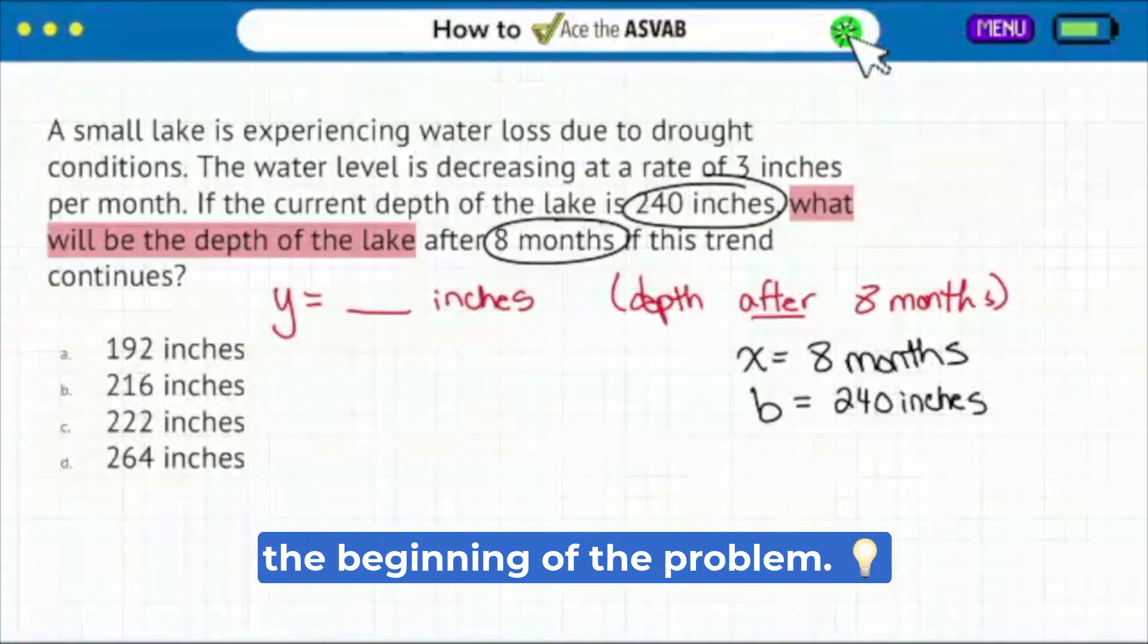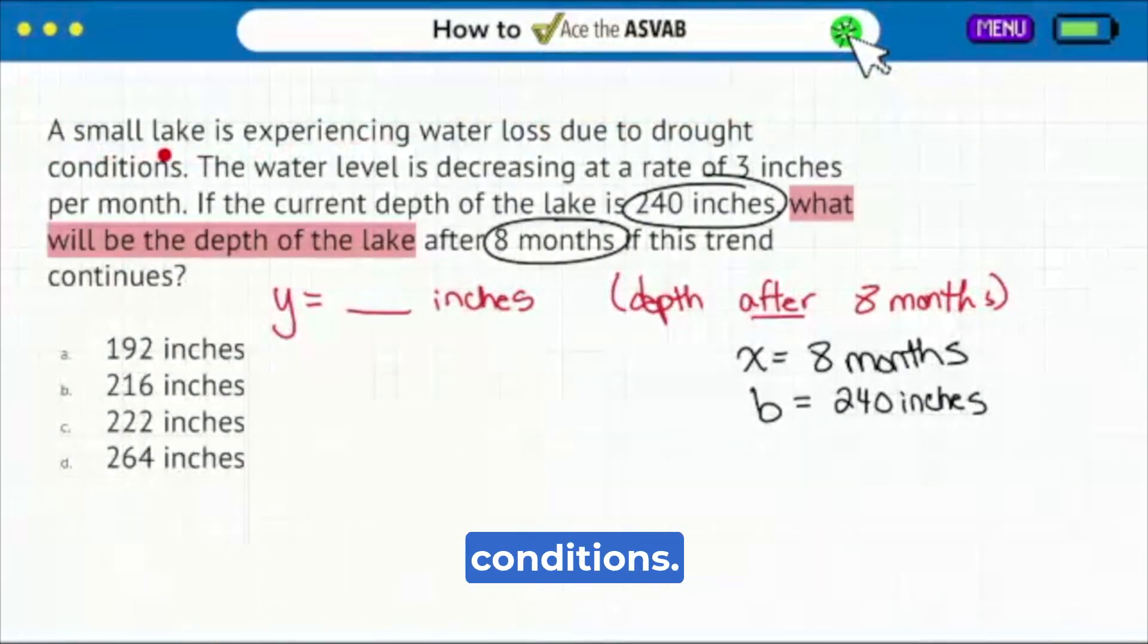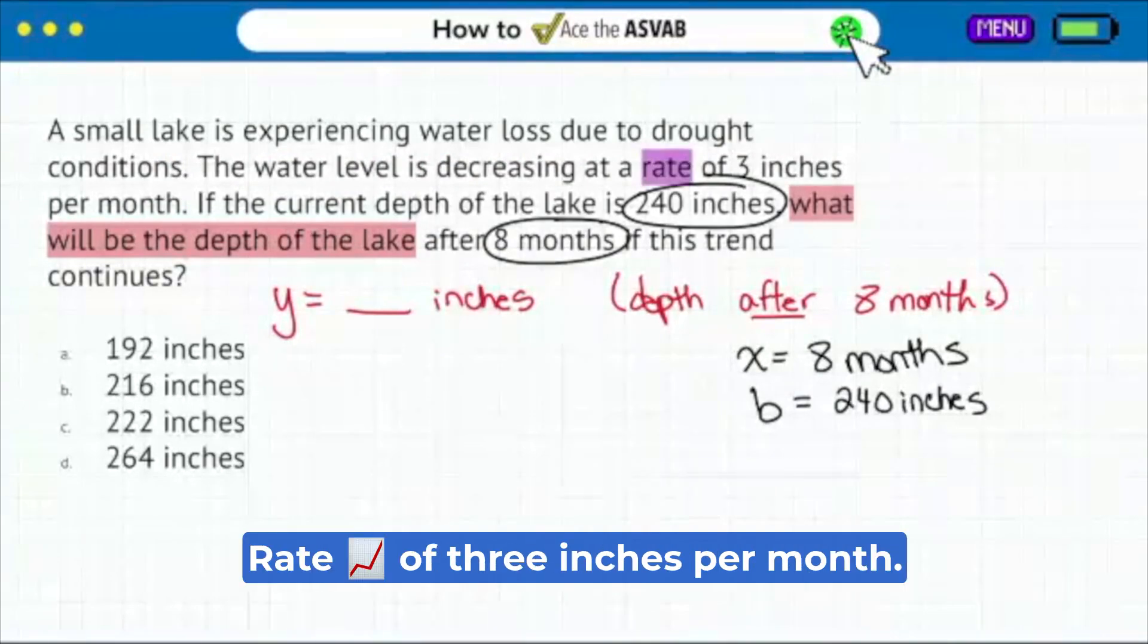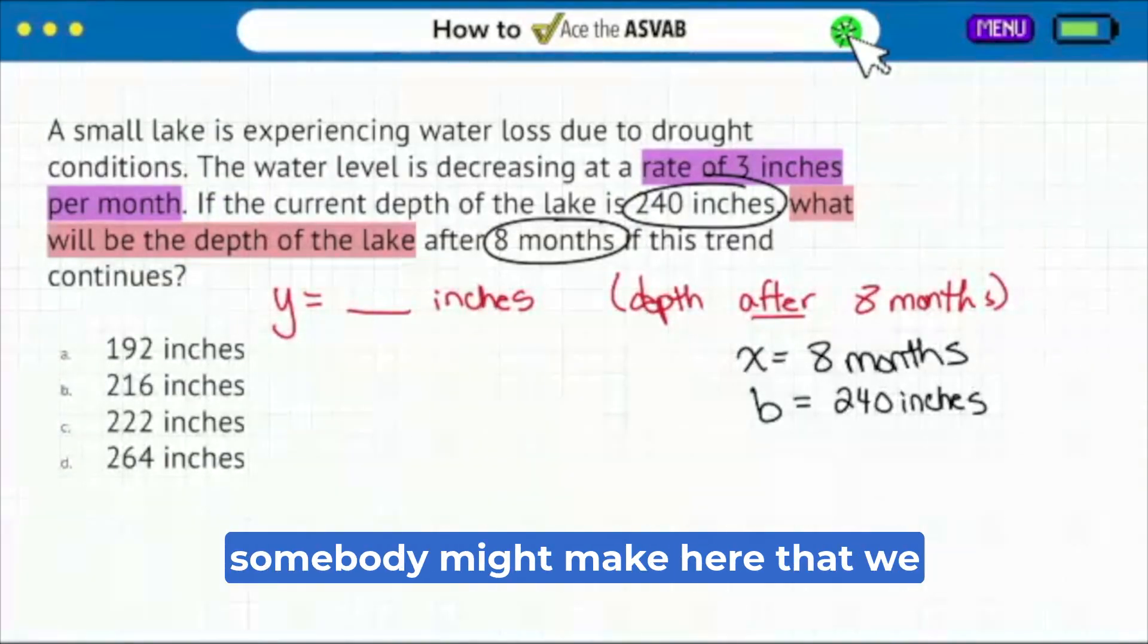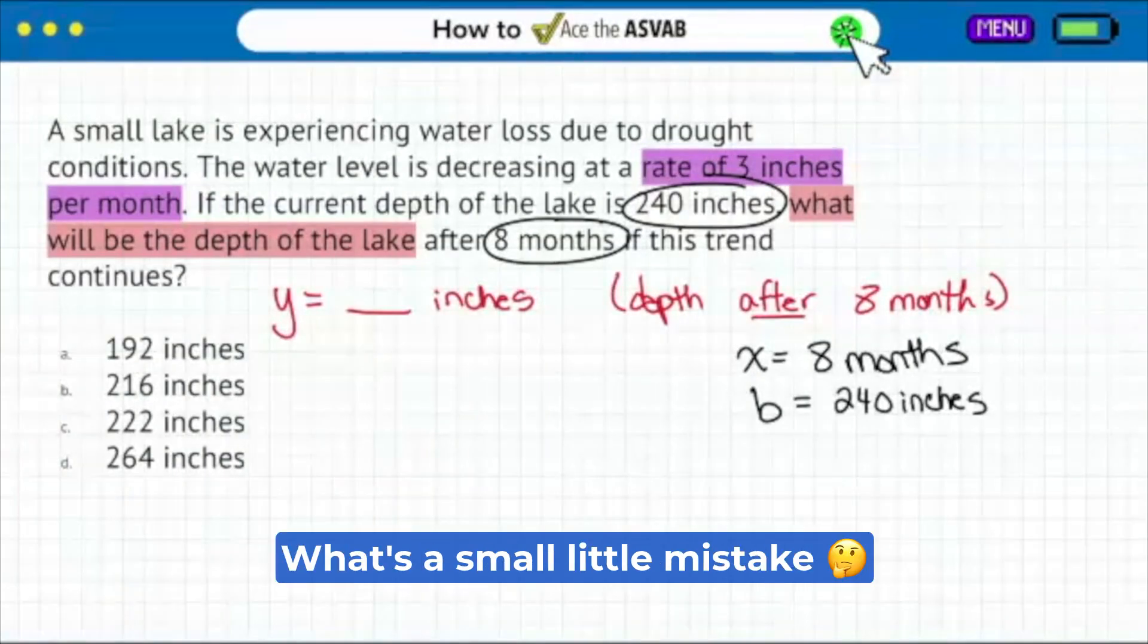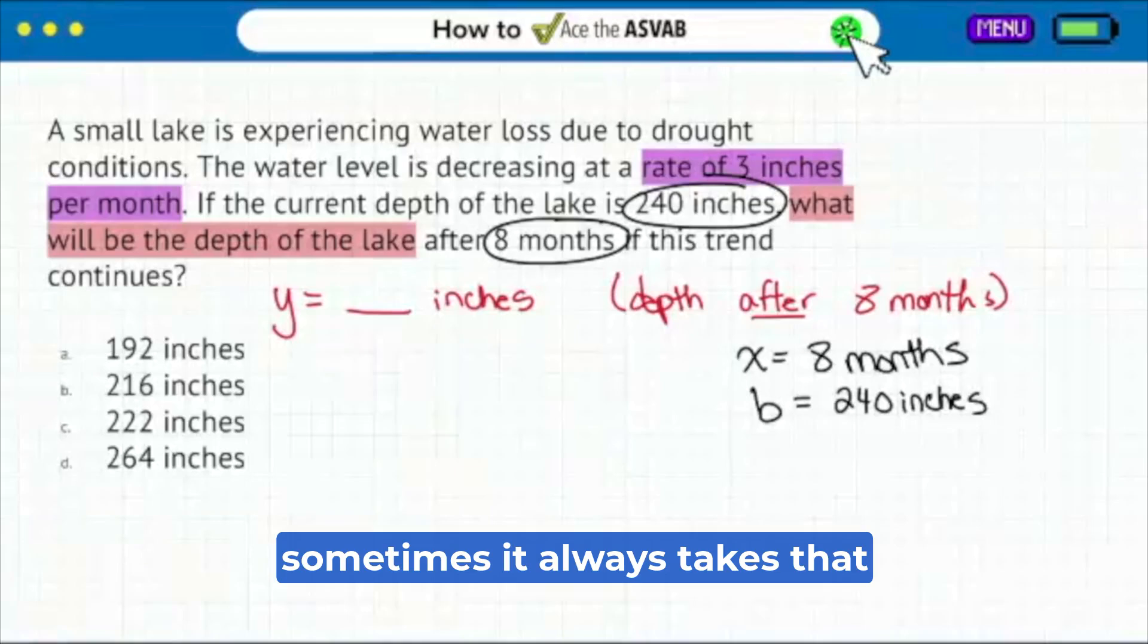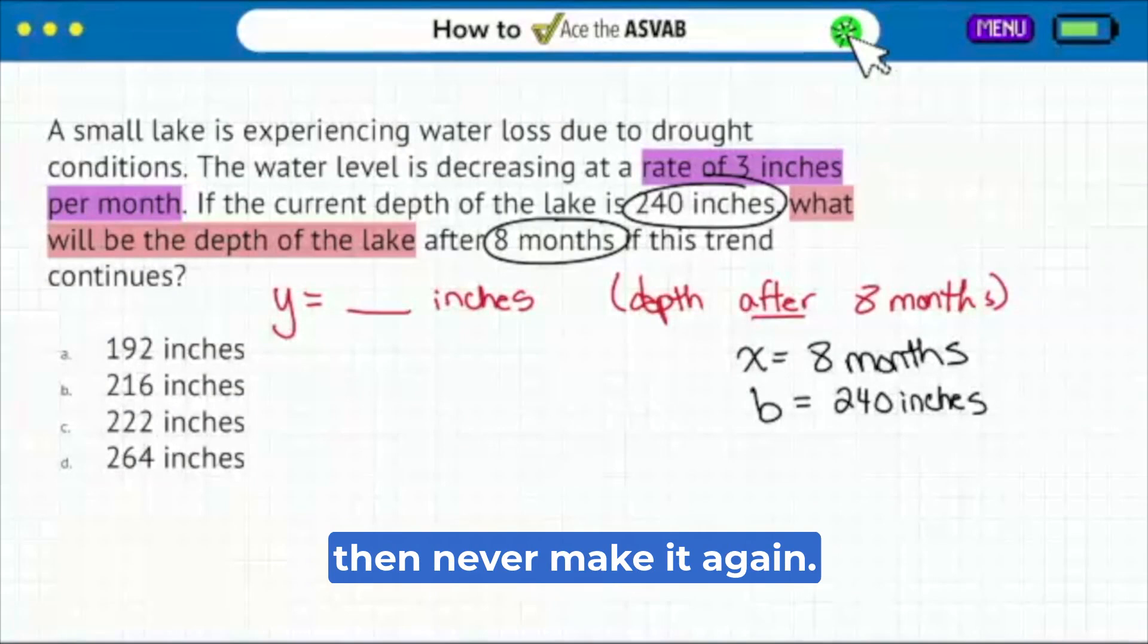And then the other thing from the beginning of the problem: a small lake is experiencing water loss due to drought conditions. The water level is decreasing at a rate of three inches per month. My party people, what's a common mistake that somebody might make here that we potentially made in the last problem? You might put three instead of negative three. Remember, sometimes it always takes that one mistake that you're just a little bit embarrassed about to then never make it again.